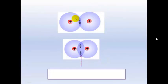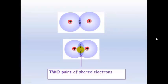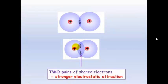Notice the difference between single and double covalent bonds. In a double covalent bond you have a greater negative charge in the middle, which causes stronger electrostatic attraction with the corresponding nucleus. This means that in a double covalent bonded molecule the atoms are closer together than in a single covalent bonded molecule.